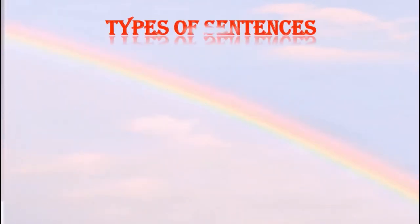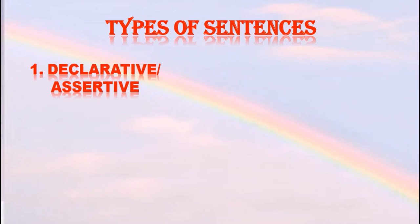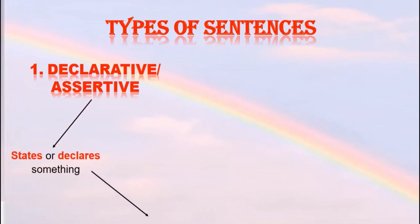So my dear students, today we have learnt four important types of sentences. Let us quickly brush up. Declarative or assertive sentences state or declare something and end with a full stop.